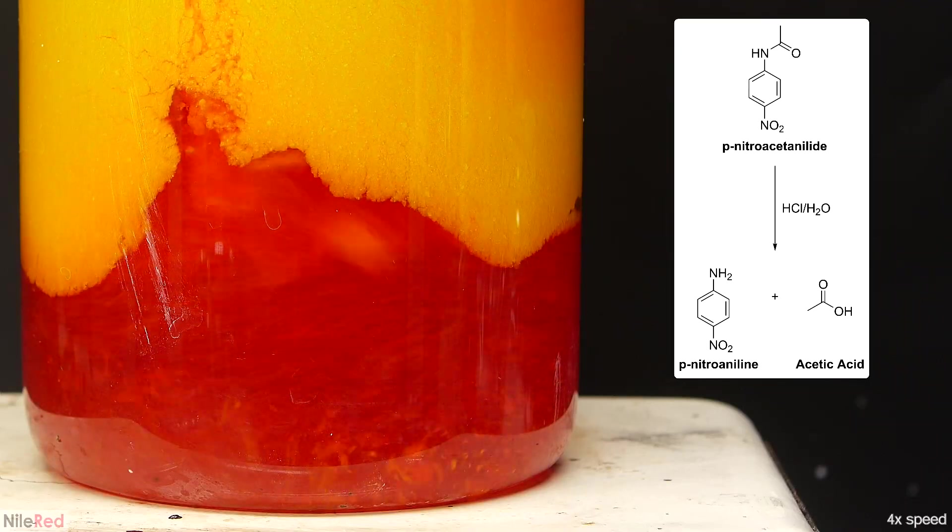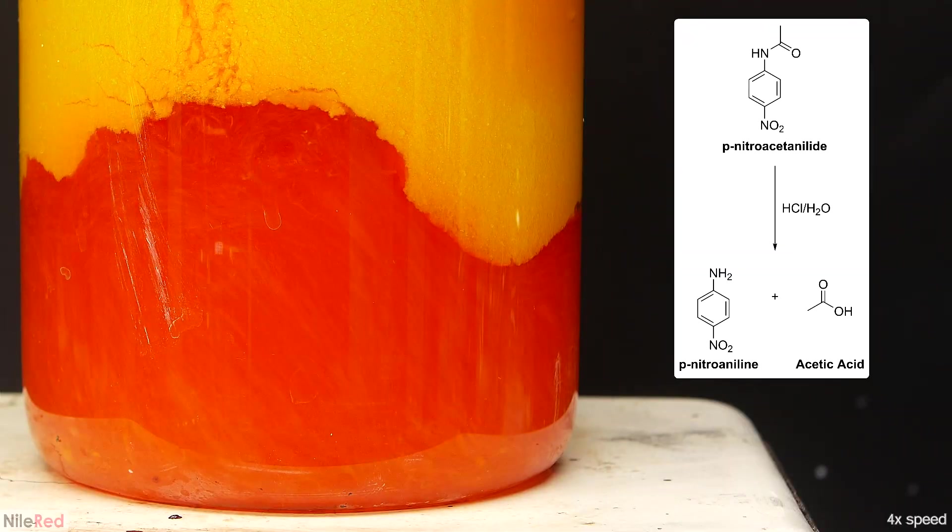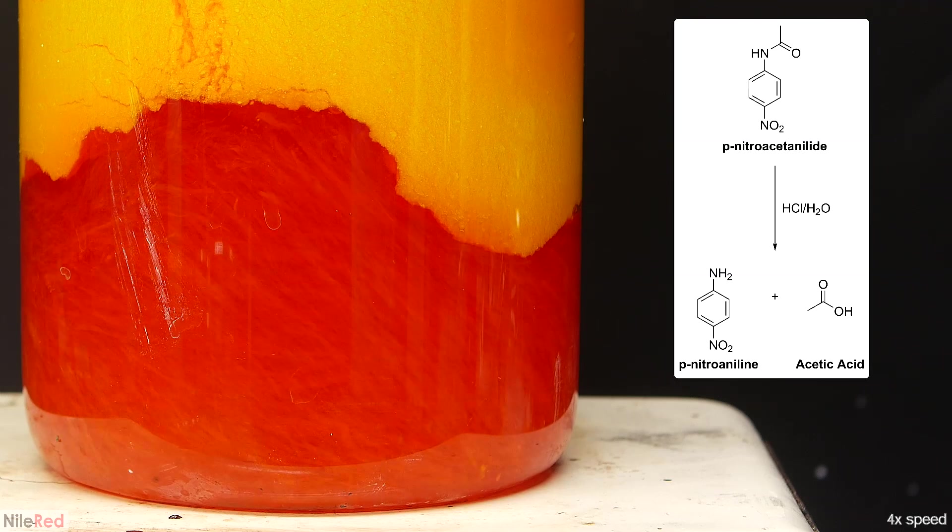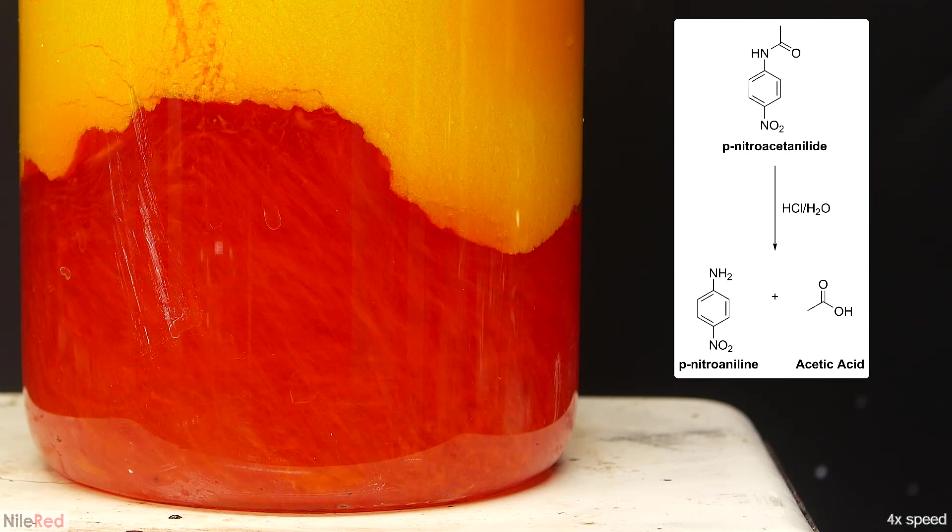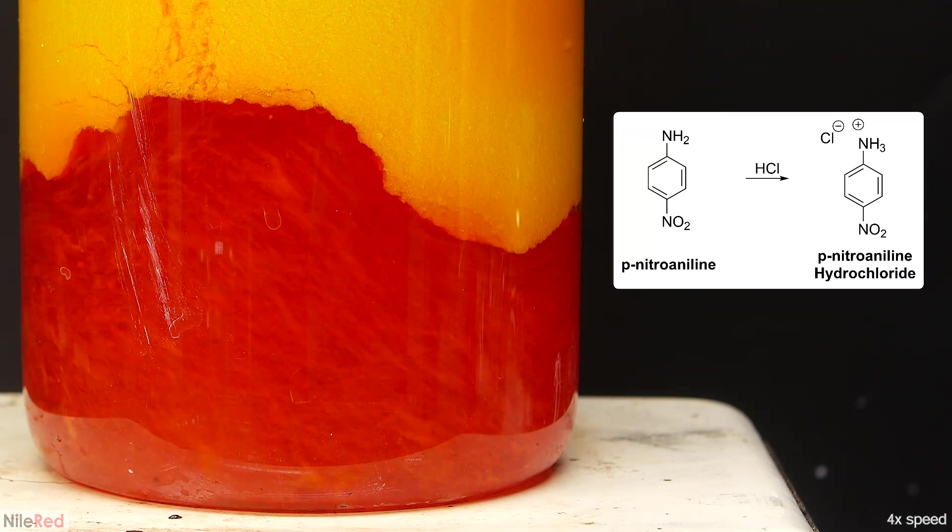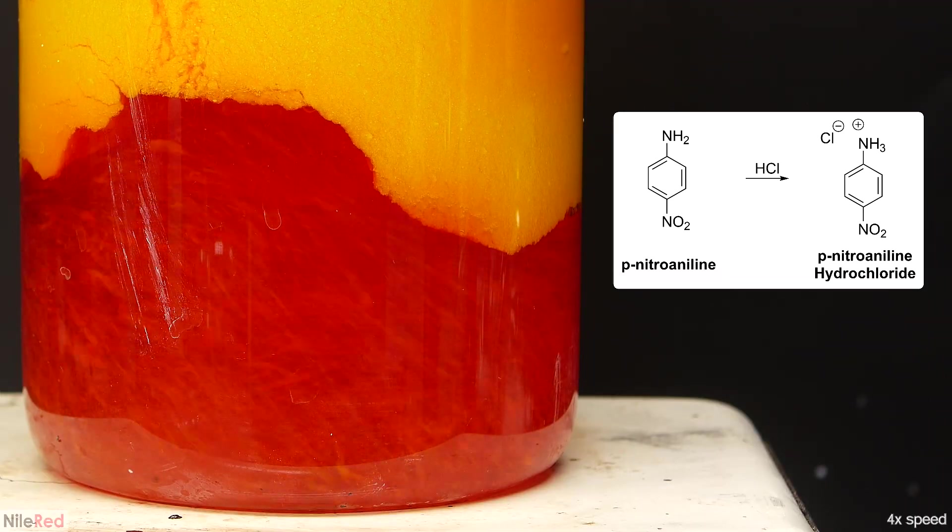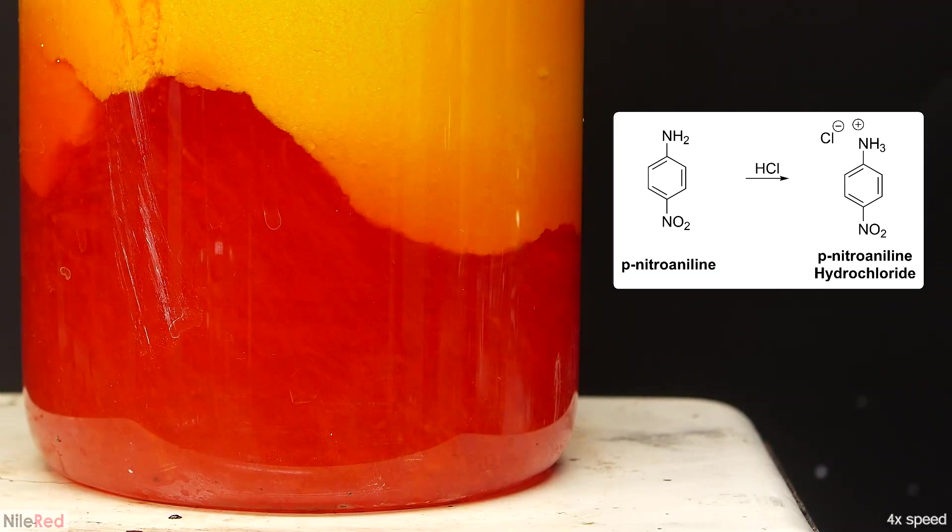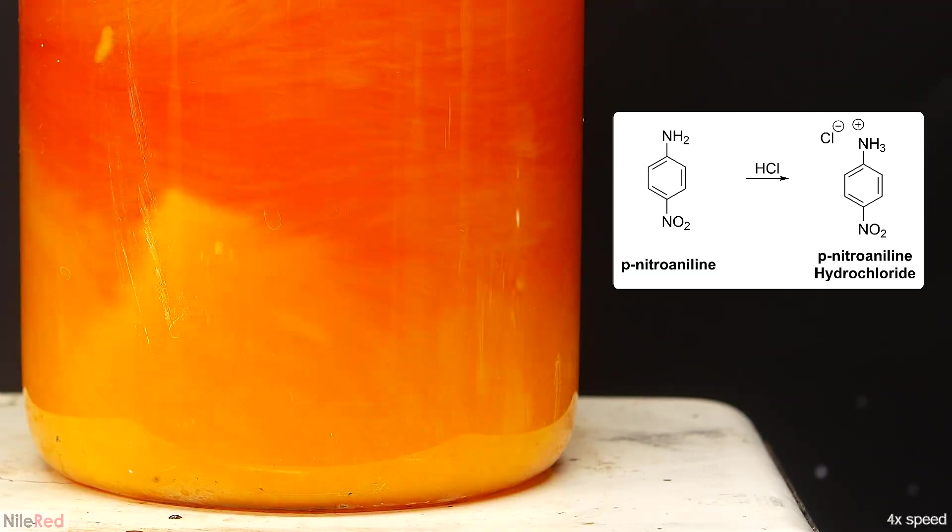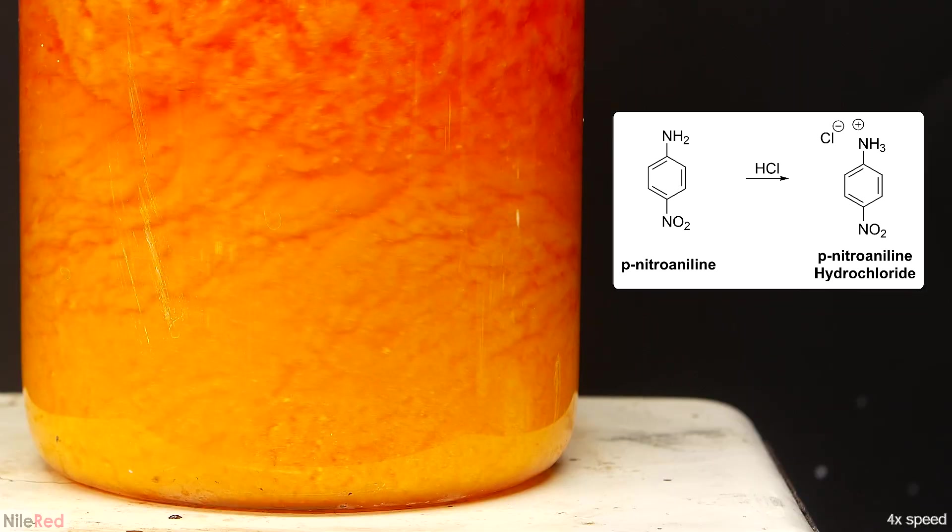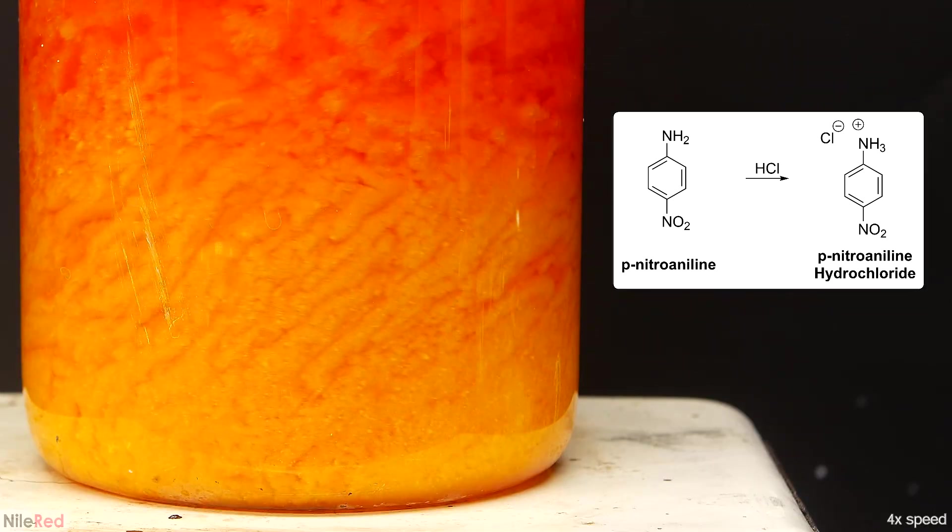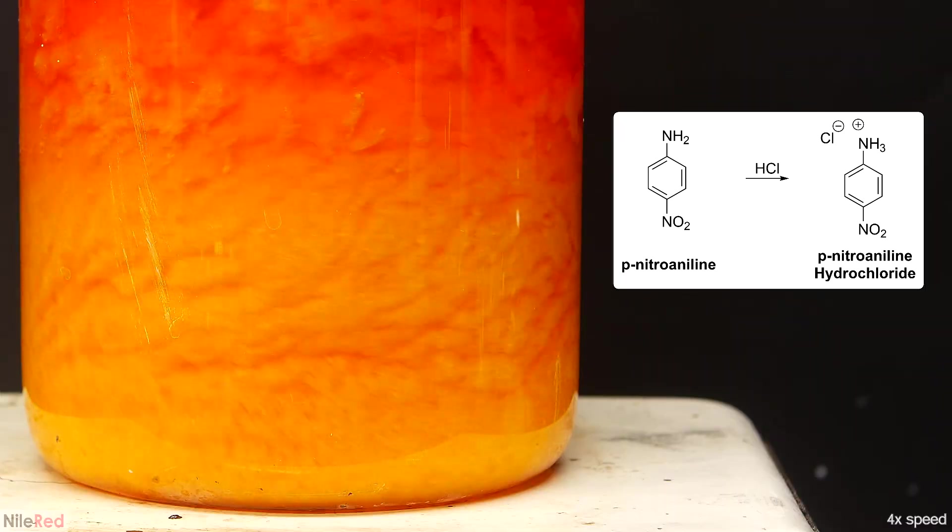What I'm doing here is a hydrolysis reaction, where the P-nitroacetanilide is being converted to P-nitroaniline, with acetic acid as a side product. The P-nitroaniline that forms has a free amine group in it, which is basic, so it reacts with the hydrochloric acid. This produces a salt compound, simply called P-nitroaniline hydrochloride, which is soluble in water. So as the reaction progresses, more and more of our product should dissolve into solution, until it's eventually all gone.